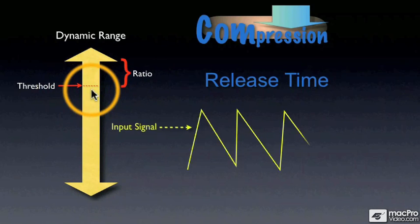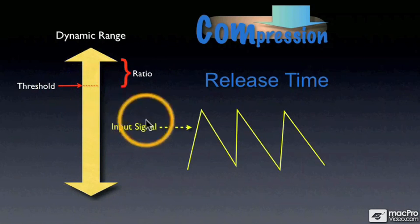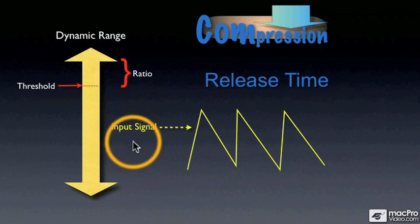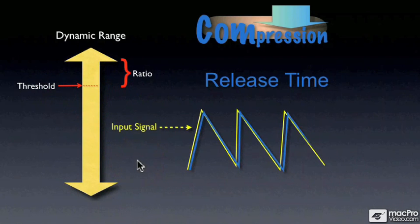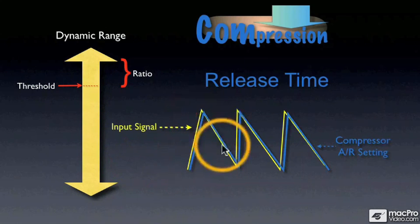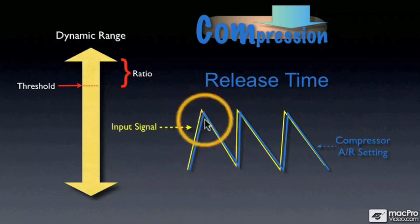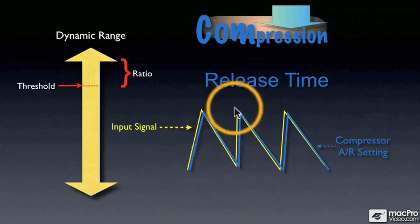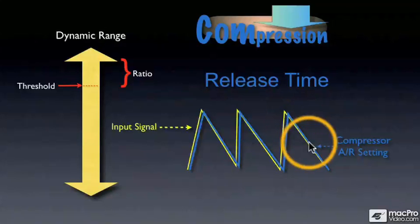So, here is a signal with a lot of transients. And here are our attack and release time settings on our compressor. You can see that our attack and release times on the compressor mirror the signal.